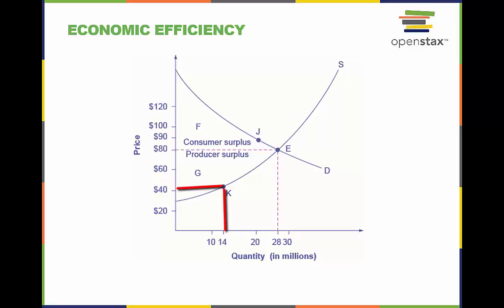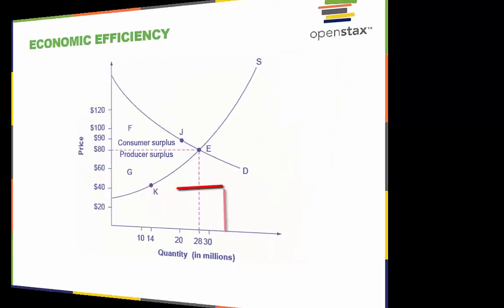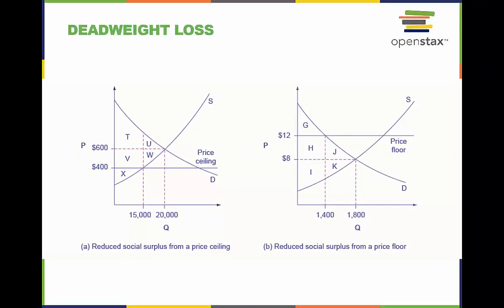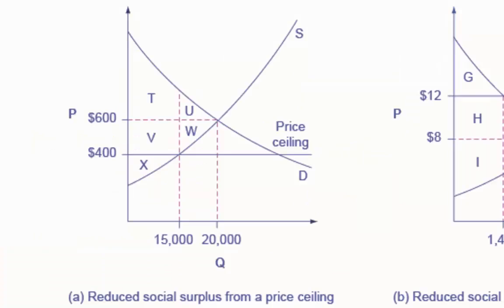In markets that are regulated by price controls, some of the efficiency is lost. We see this impact of regulation in this example. The model on the left shows that the original equilibrium price is $600 with a quantity of 20,000. Consumer surplus is T plus U, and producer surplus is V plus W plus X.